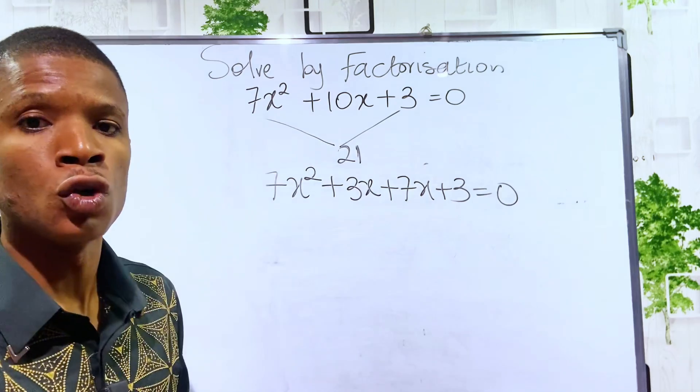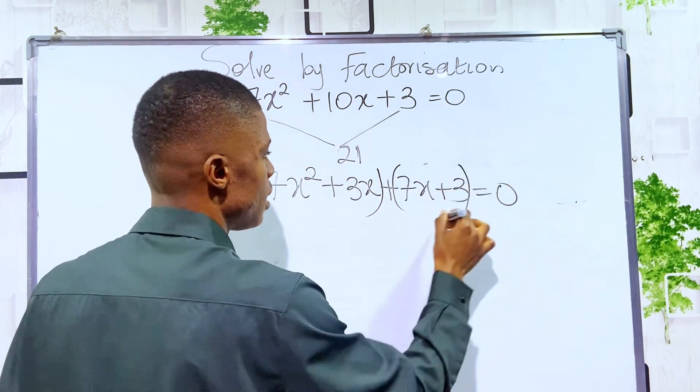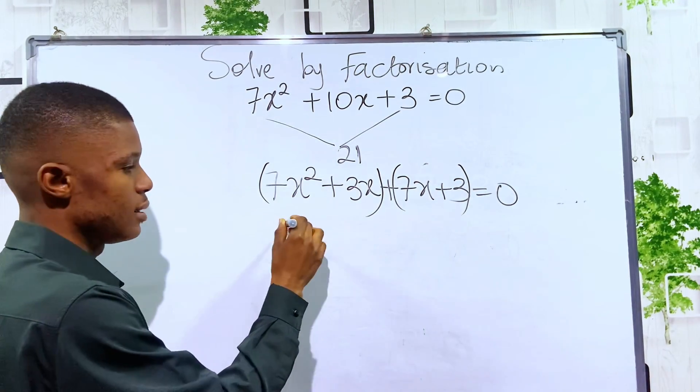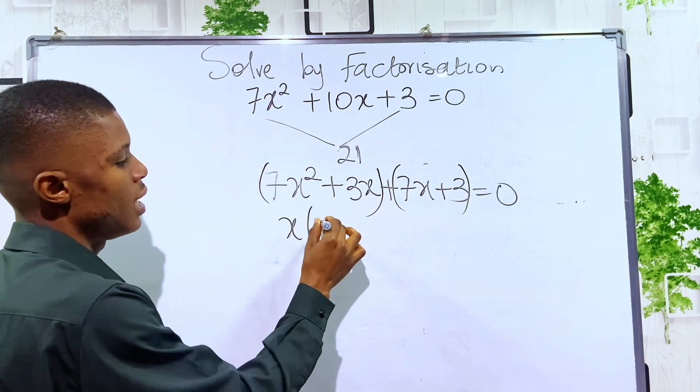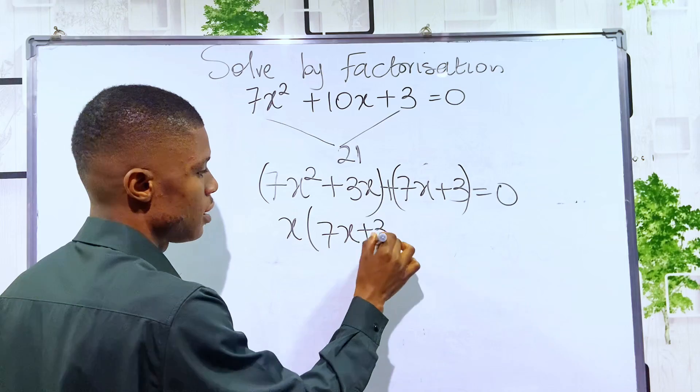Now we have to group the brackets. We group the first two terms and group the last two terms. If you look here, we can factor out x. If you factor x from 7x squared and 3x, you are left with 7x plus 3.